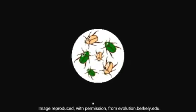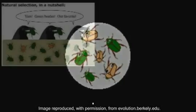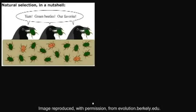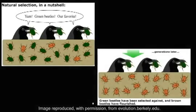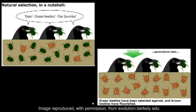Evolution can best be described as descent with modification. In a nutshell, what this means is that different individuals of the same species display different versions of a trait. Because in a given environment, some versions of a trait will make one more likely to survive and mate than others, the genetic composition of a population will change over time in response to its environment.